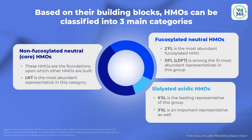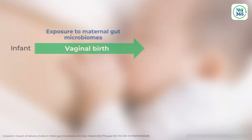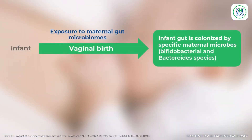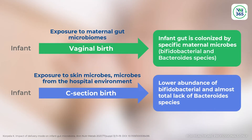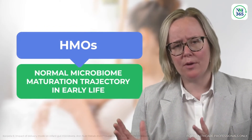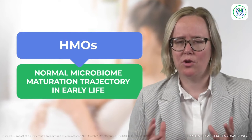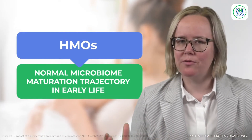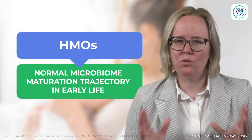HMOs cannot be digested by the infant but specifically support the microbiome and immune system. Human milk fed infants born vaginally have a typical peak of bifidobacterial abundance in the early months of life. Infants receiving cow milk based formula have no such bifidobacterial dominance and show a more rapid diversification of their microbiome. This showcases the link between HMOs and a normal microbiome maturation trajectory in early life, with human milk being the optimal food to support the infant in this crucial time window.